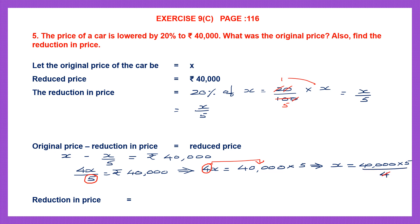Now we are going to find only the value of x. We write 40,000 into 5 on the right. Then we move the 4 from the left to the right — because it is multiplication here, on the right it becomes division by 4. We can cancel 4 into 10,000 equals 40,000. Multiplying numerators: 5 ones are 5, and adding 4 zeros gives us 50,000. So x equals 50,000, which is the original price of the car.